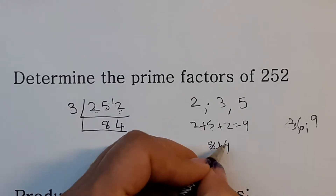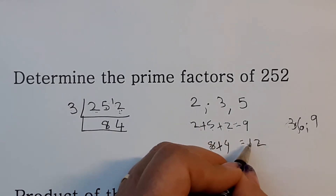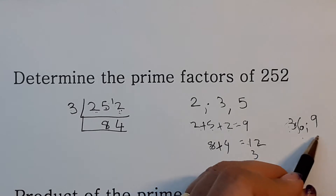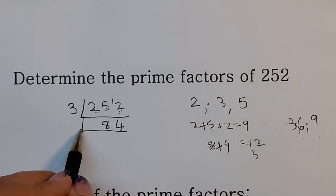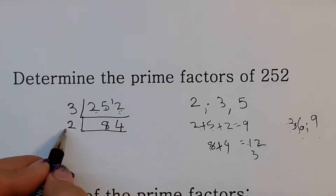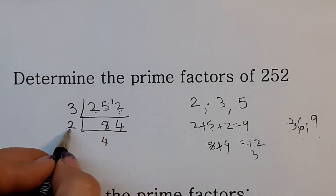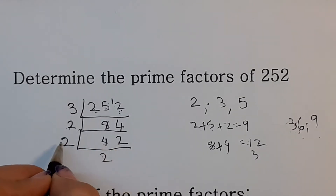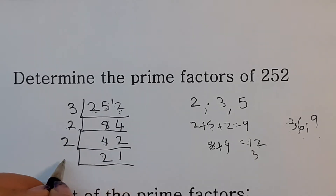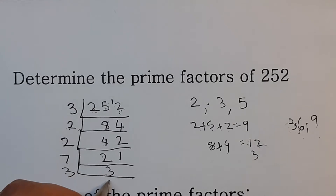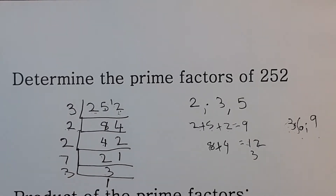Eight plus four gives twelve — two digits again, so add those: one plus two gives three, which ends in three, six, or nine. So I can divide by three again, but I see two will be easier. Eight divided by two is four, four divided by two is two, four divided by two is two, two divided by two is one. Now it's divisible by three or seven — let's take seven. Twenty-one divided by seven is three, and three divided by three is one. You continue until you reach one at the bottom.